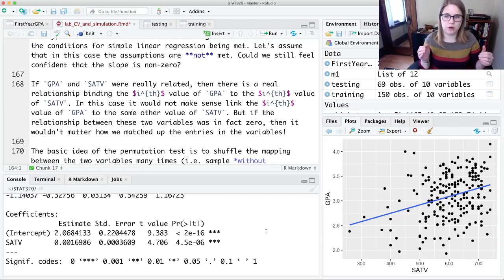We could break the relationship between the observations, and that would mean there's no relationship. So that's the idea of a permutation test or randomization test: we're going to shuffle the mapping between the two variables.